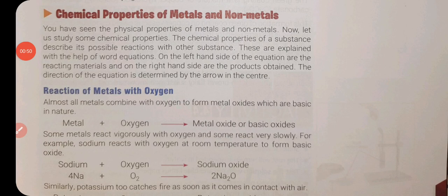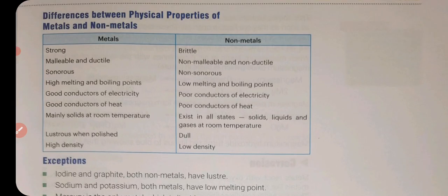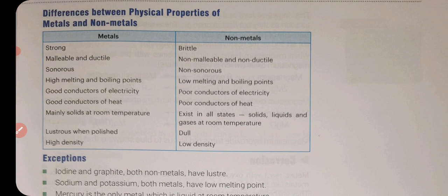In the previous video we studied physical properties of metals and non-metals and compared both. We have seen that metal is strong, malleable, ductile, sonorous, has high melting and boiling point, is a good conductor of electricity and heat, is solid at room temperature, lustrous with a shiny appearance, and has high density.